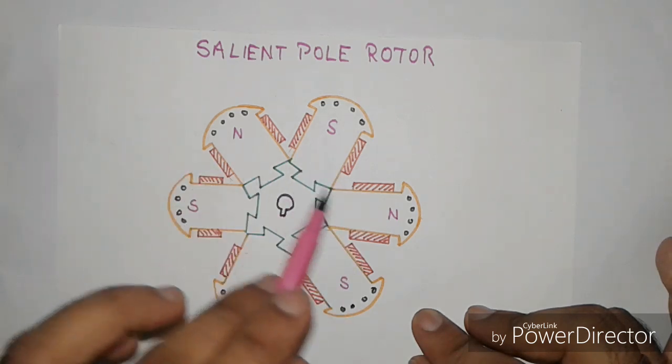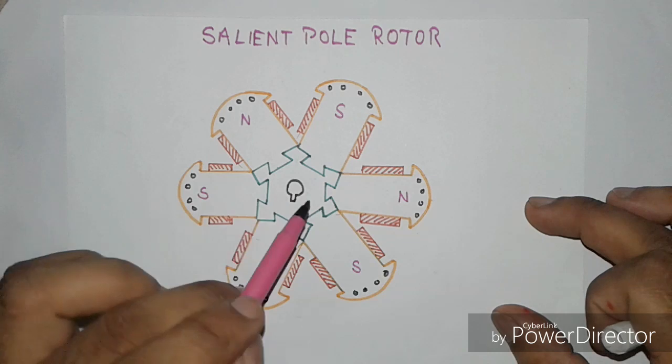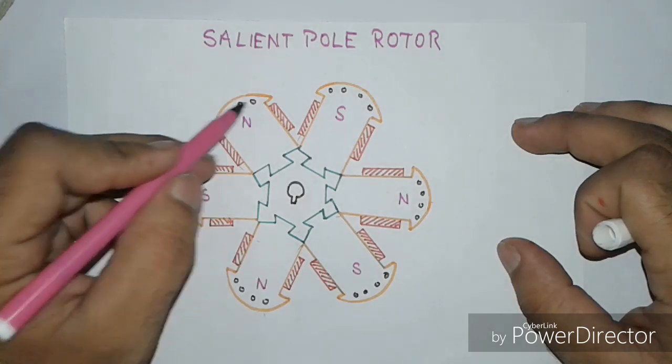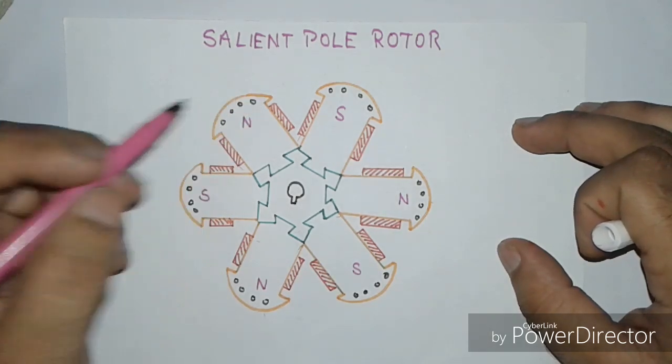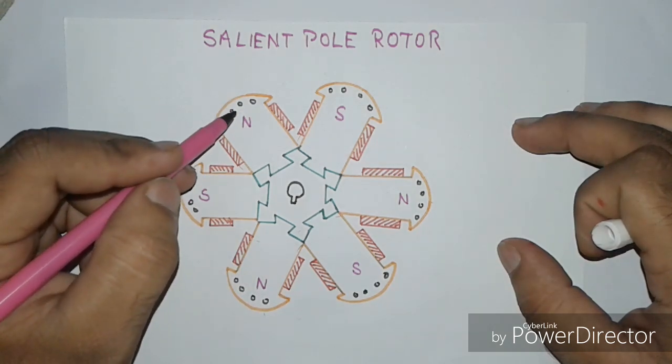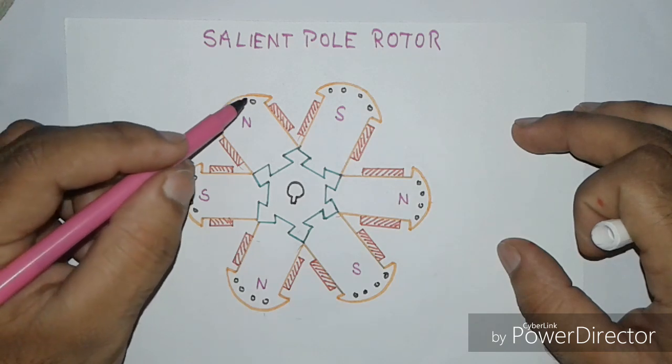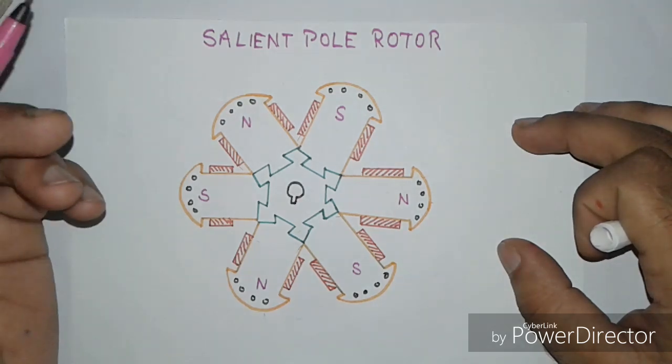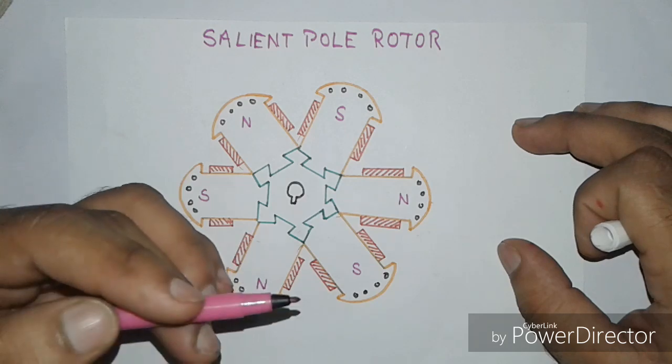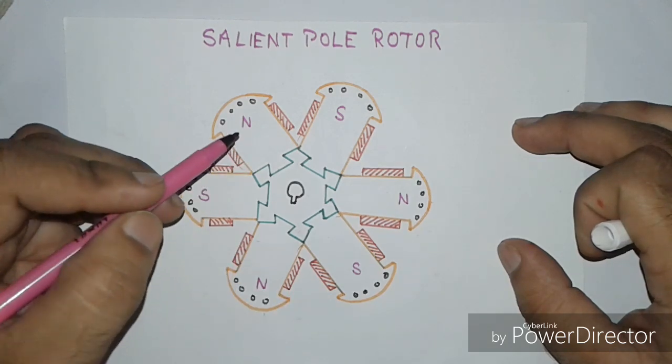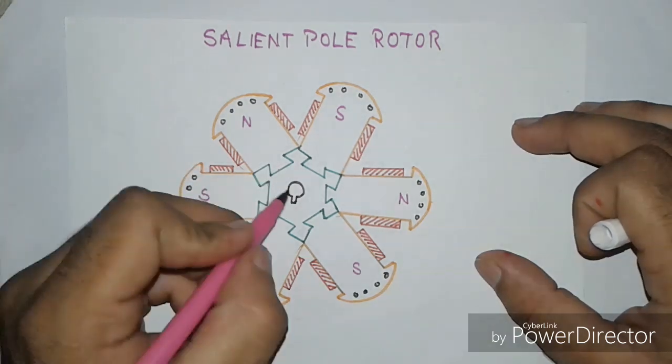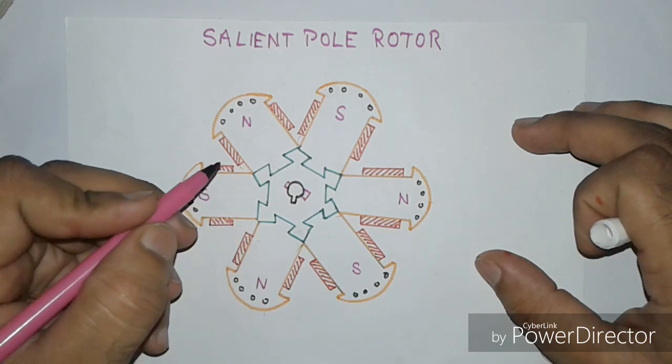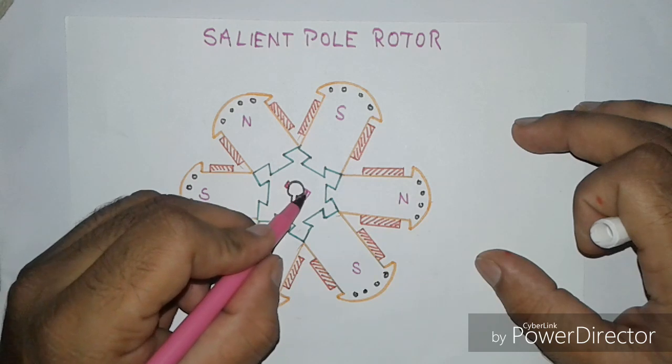The damper winding is made up of copper bars and these bars are usually inserted parallel in the pole face to prevent rotor oscillation during sudden changes in load condition. Both ends of the winding are short circuited and connected to the rings.